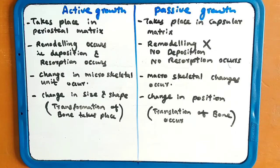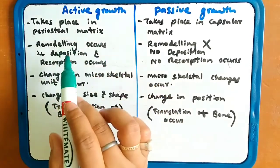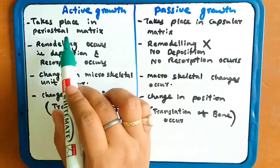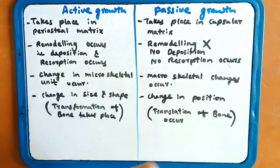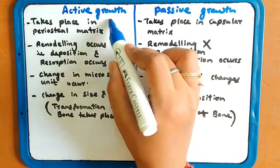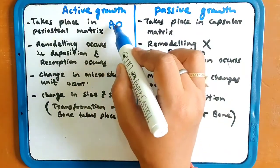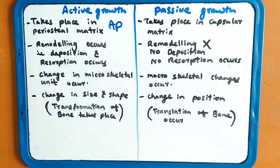Active growth and passive growth — what is the difference between the active and passive? Active growth takes place in periosteal matrix AP. A is active, P is periosteal matrix.